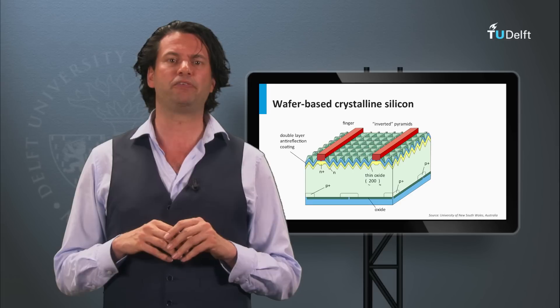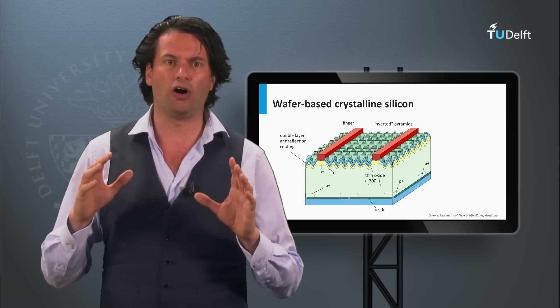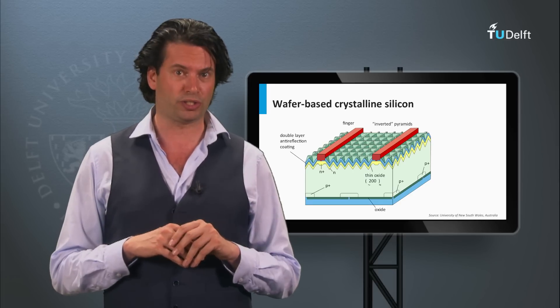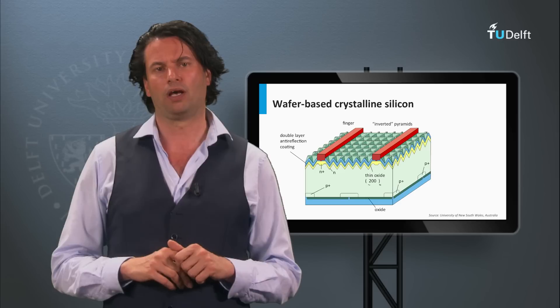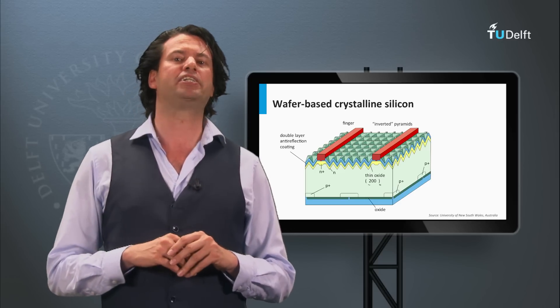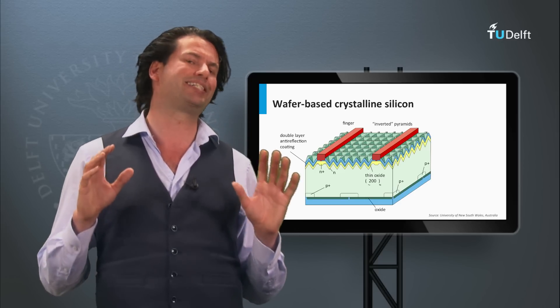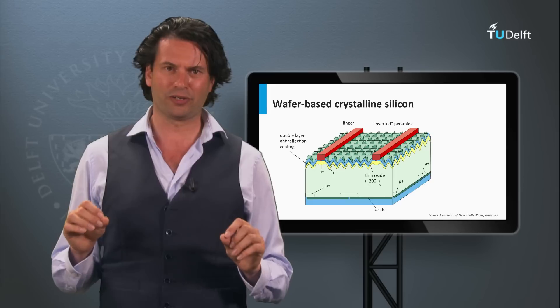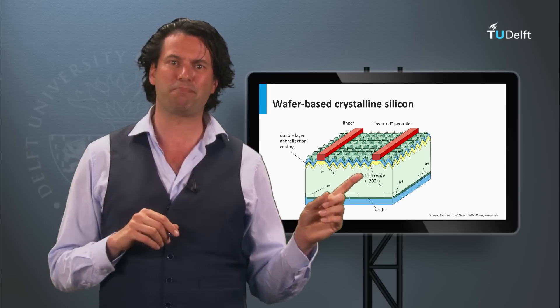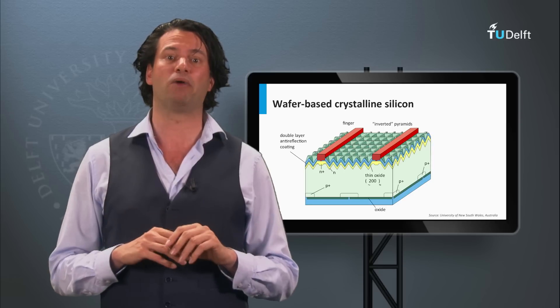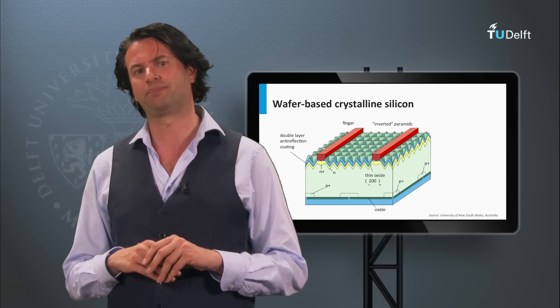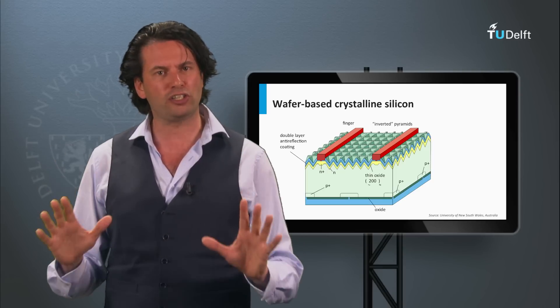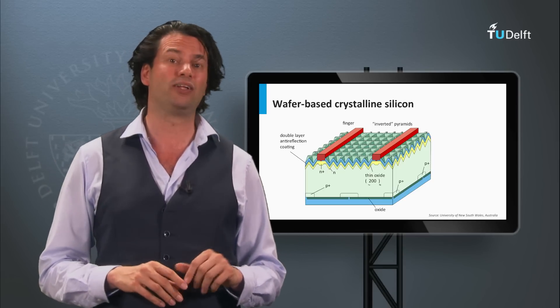Next to categorizing the PV technologies in the three generations, we indicate the various PV technologies based on the semiconductor material used as absorber layer in the solar cell. The most dominant PV technology is based on crystalline silicon wafers. This technology represents around 90 percent of the current PV market and belongs to the first generation PV technology. We will discuss this technology in great detail in week 4.